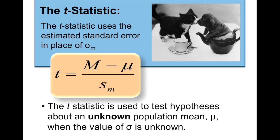Here's your t equation: t equals mean minus mu divided by the estimated standard error. The t statistic is used to test hypotheses about an unknown population mean, mu, when the value of the standard deviation is unknown.